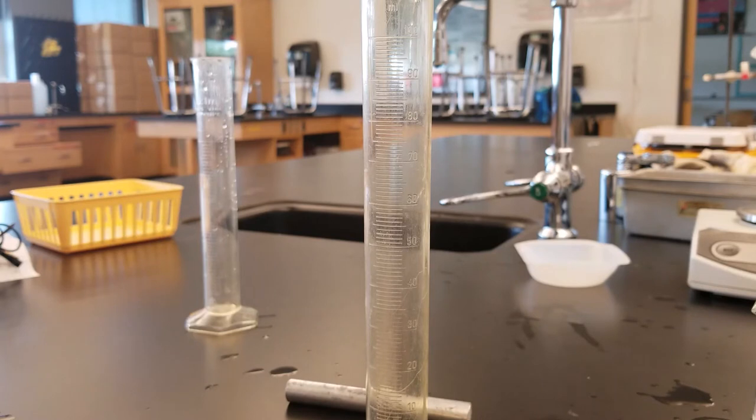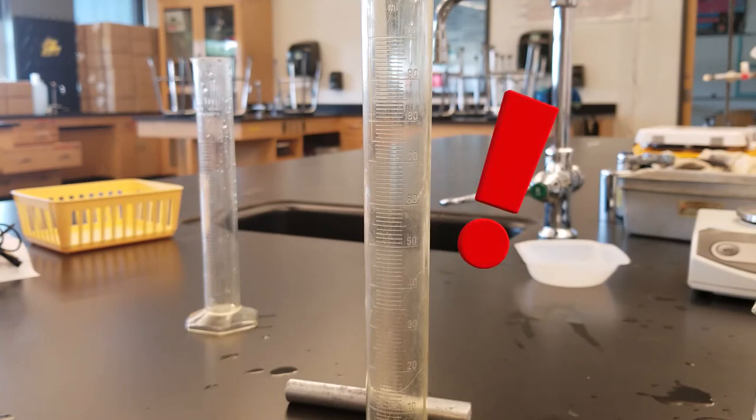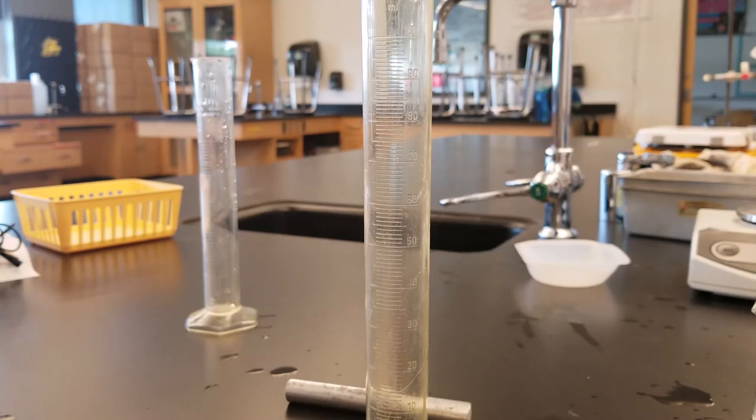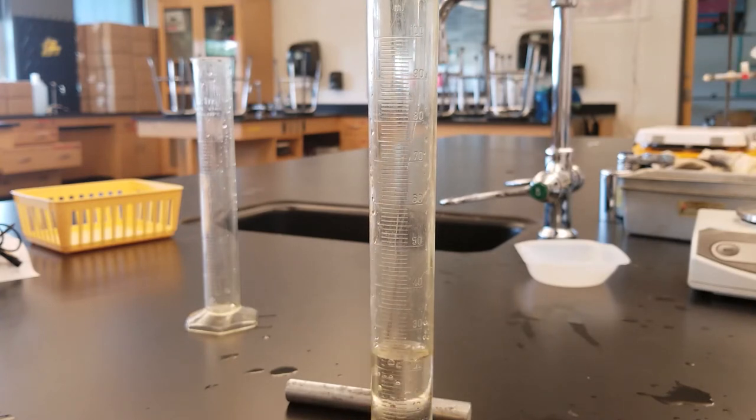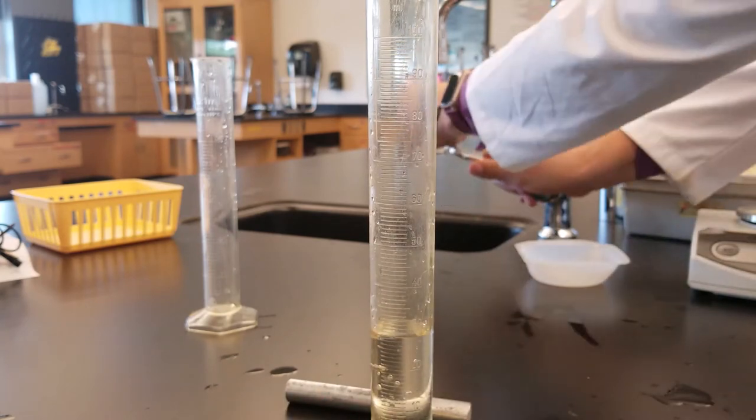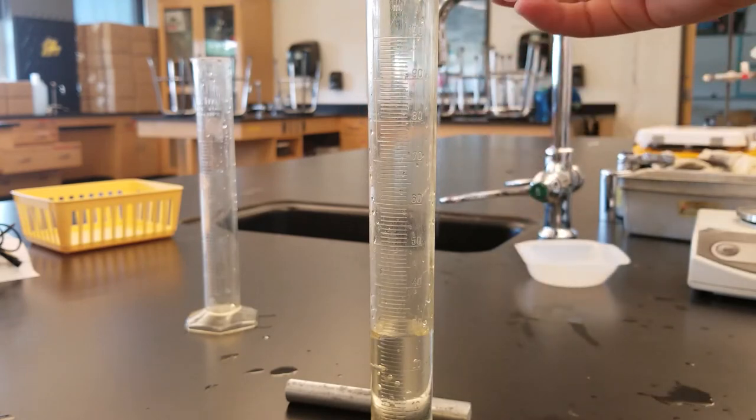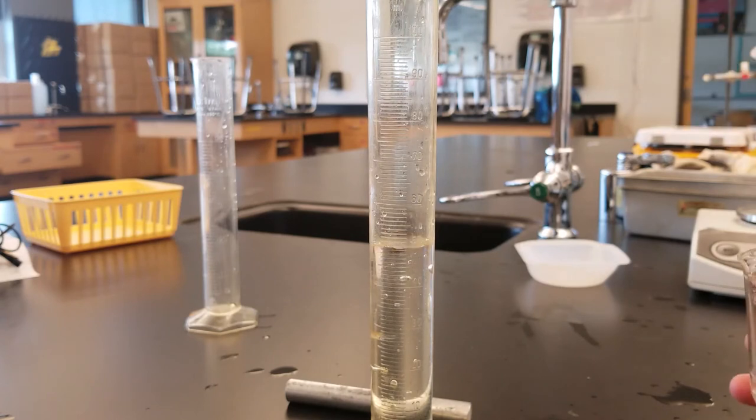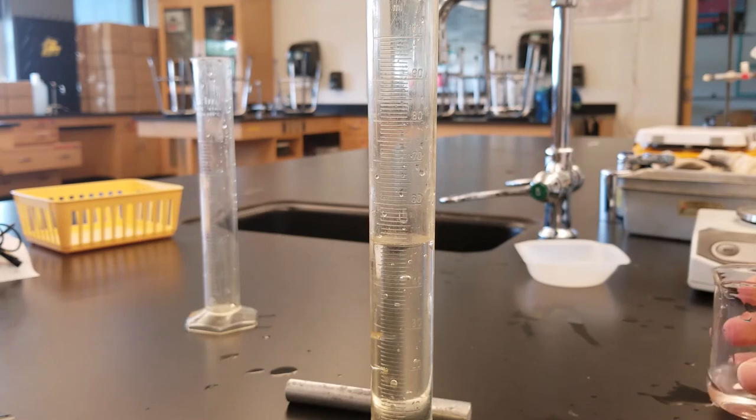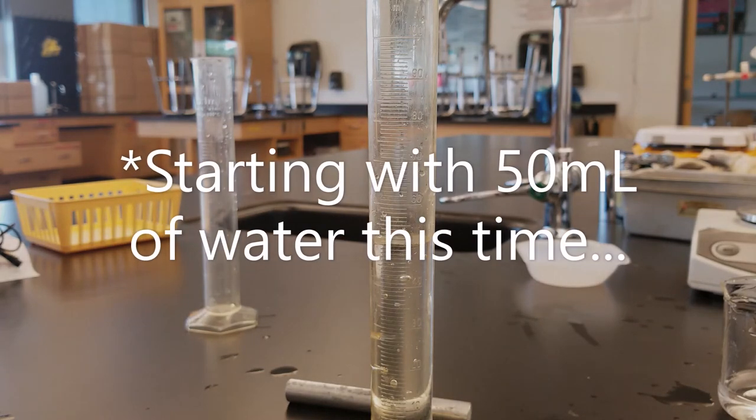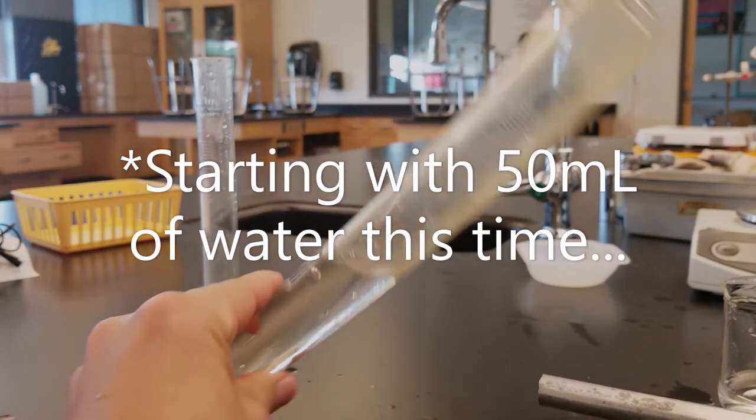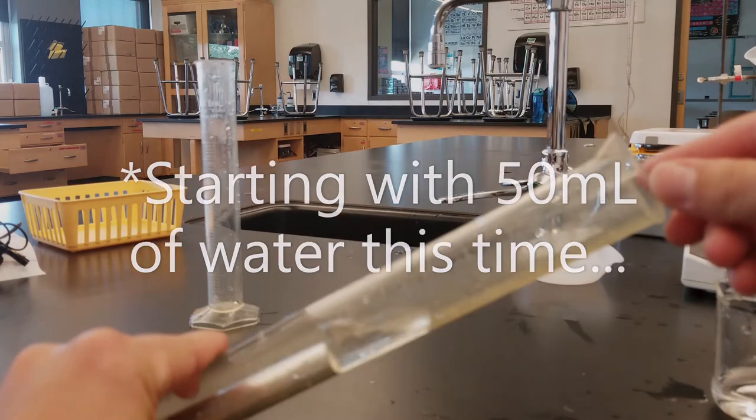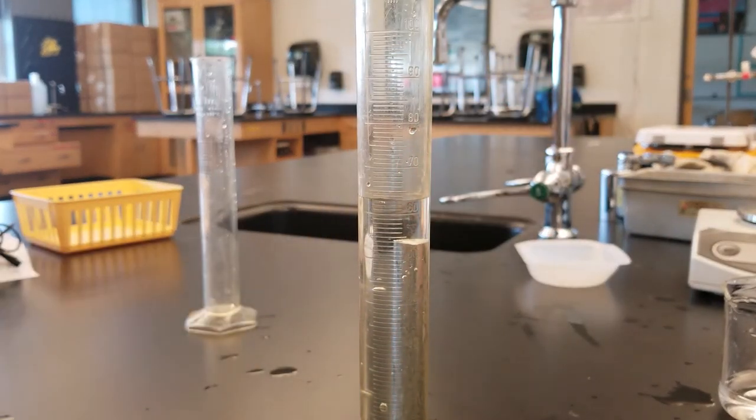Since object number five, the ten centimeter long silver rod is substantially larger than the others, it is recommended to use the larger one hundred milliliter capacity graduated cylinder. This time I'm going to put fifty milliliters of water in to start. Make sure to record the starting water volume as fifty milliliters. Remember this is an exception, not what we did for the first four. Turn at an angle, slide the largest object in, being careful not to splash, and then record this new volume.